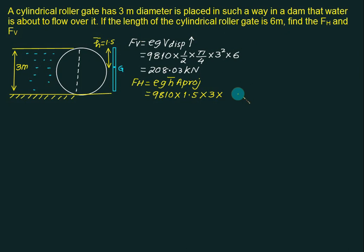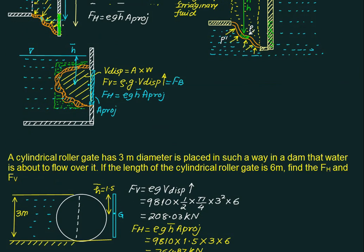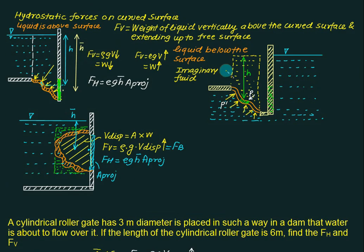In summary, this is a simple method: identify which of the three cases applies. Case 1 — liquid really present above, force acts vertically downward. Case 2 — imaginary liquid column, force acts vertically upward (formula remains the same, direction changes). Case 3 — volume displaced, apply buoyancy force. For all three cases the calculation of FH remains the same using the projected area approach.